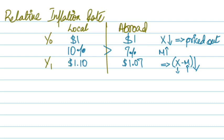This is another reason why X minus M could shift. Of course, the case would have been different if the local inflation rate was lower than the inflation rate abroad. In that case, exports would have risen because foreign goods would have been expensive and locally produced goods were cheaper. Imports would have fallen because imported goods were expensive, and local goods would have gained competitiveness in the world market because they were cheaper.